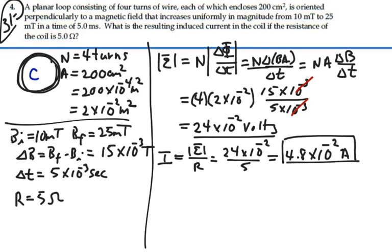For a B field going into the page, if this B field were increasing into the page, the induced B field would be out of the page, and by the right-hand rule this current would be going counterclockwise around the circuit like this.